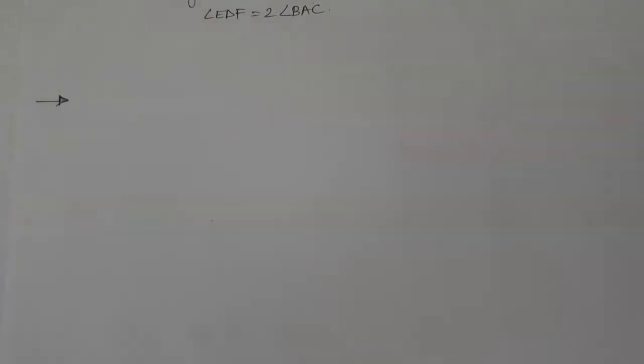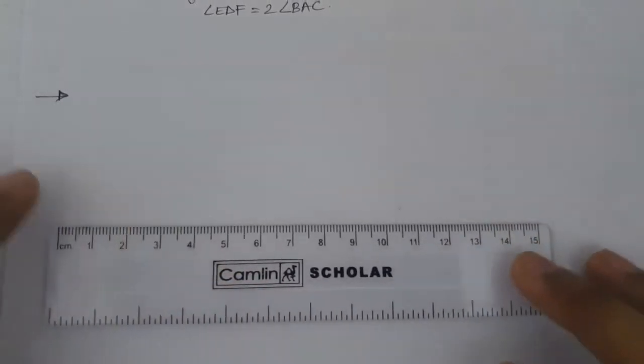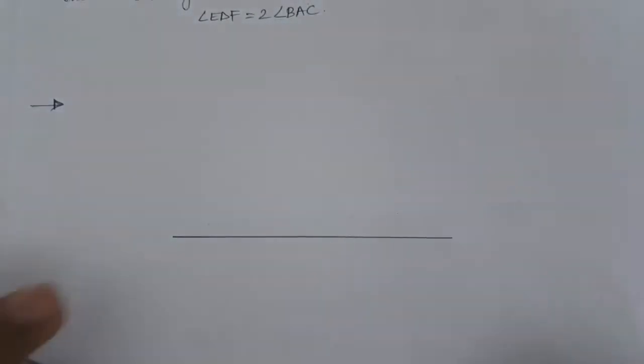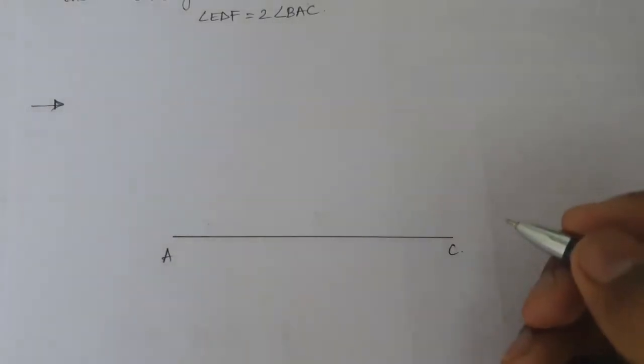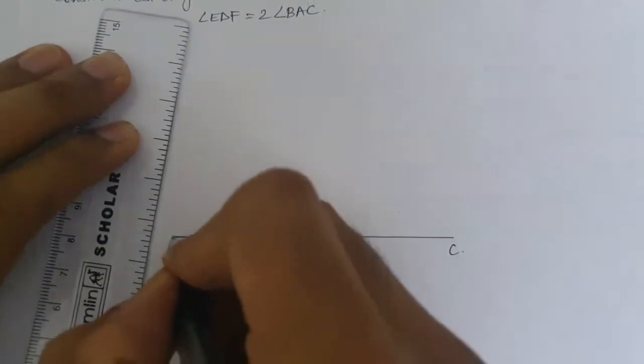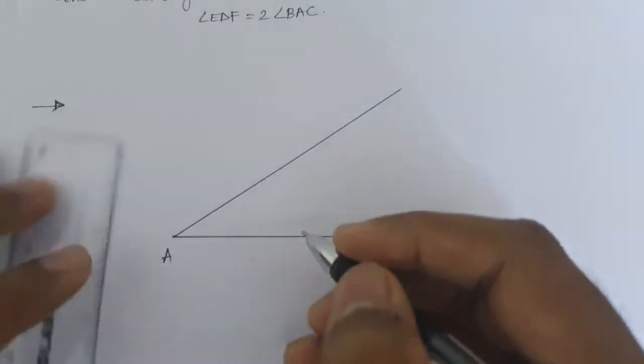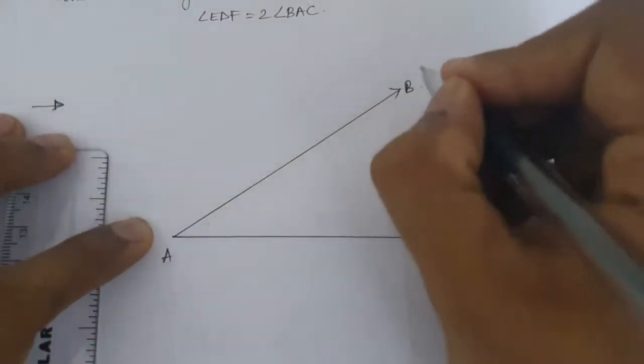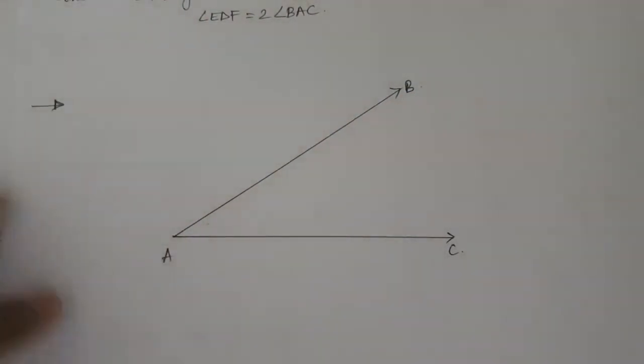So for that we can easily make a BAC and randomly make an angle. And name this point B. So we have an angle BAC but we don't know what is the measurement of that angle.